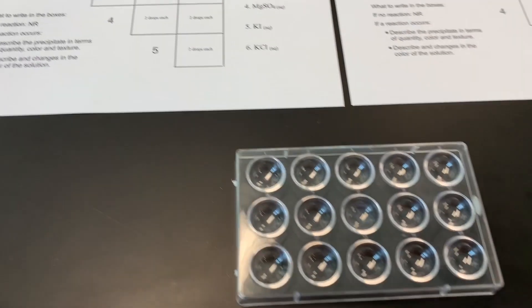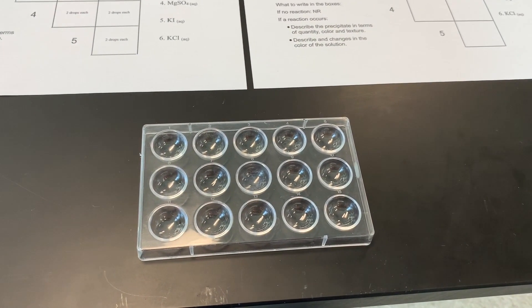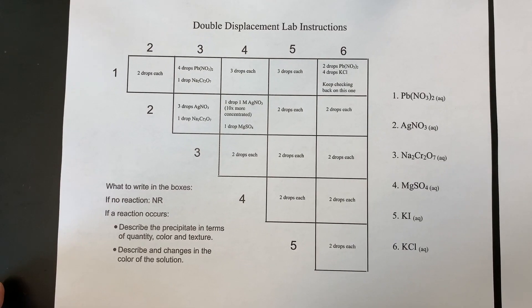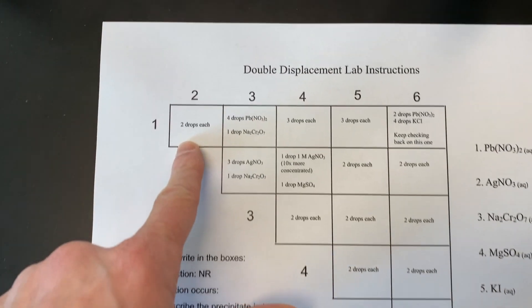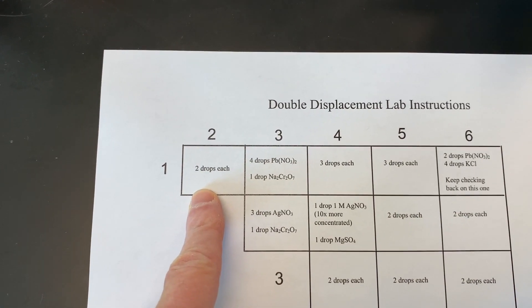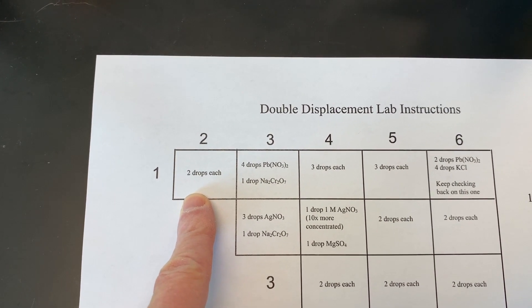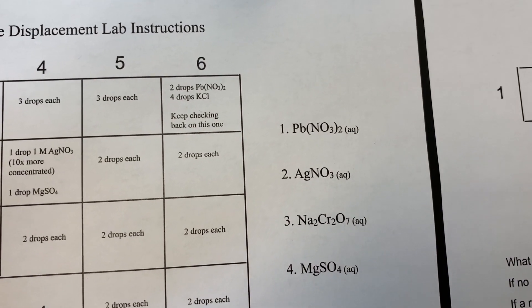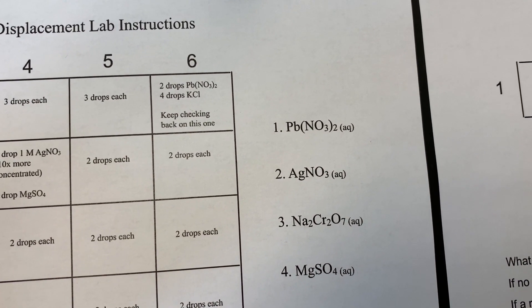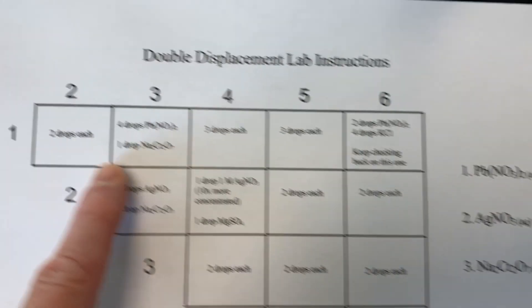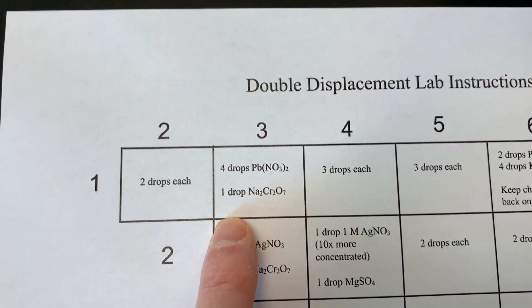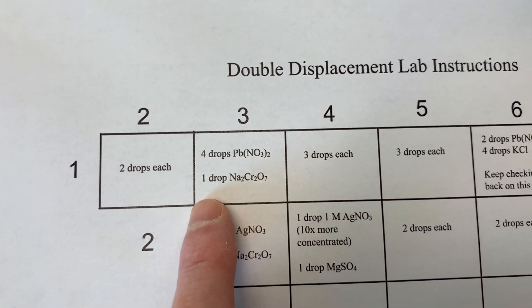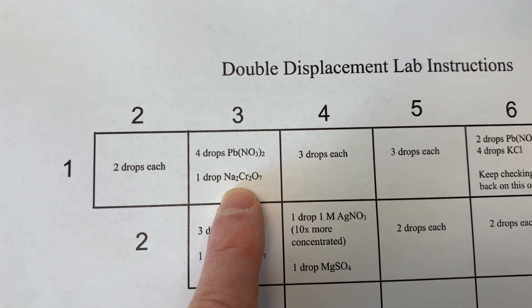Then we'll use a spot plate to look for any reactions when combining all possible pairs of solutions. For example, you're going to put in two drops of chemical number one and chemical number two. That means two drops each of lead nitrate and silver nitrate. With numbers one and three, you'll put in four drops of lead nitrate and only one drop of sodium dichromate.